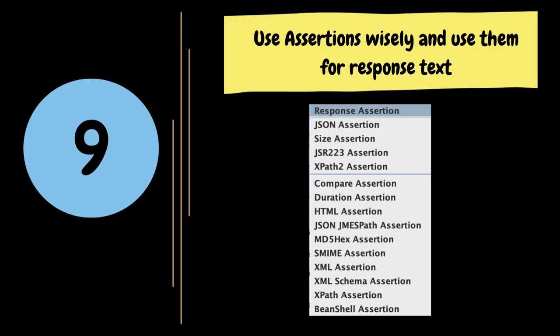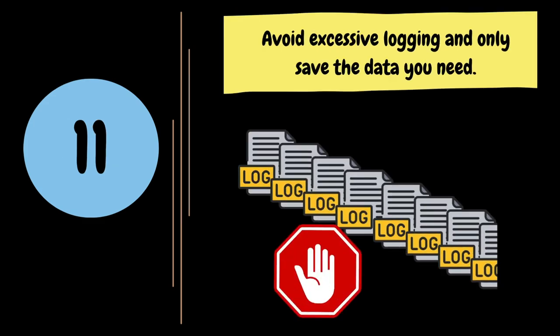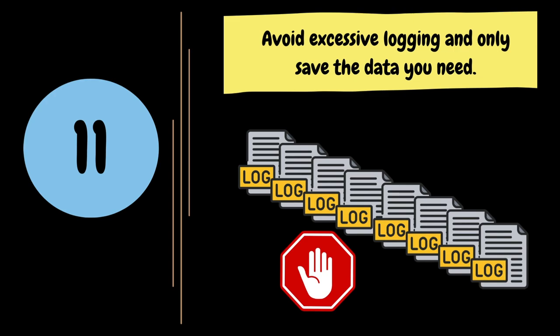We should always disable UI listeners — especially graphs and View Results Tree or table — in scripts that are going to be used for actual load tests. It is better to save results only to a JTL file using the Simple Data Writer. If you don't follow this advice, you might run into a problem where there is not enough memory for the test to run properly. JMeter allows the use of loggers and log levels to capture information about test execution, but excessive logging can significantly impact performance and consume system resources. Configure these components thoughtfully to store only necessary data. For instance, use listeners like the Summary Report or Aggregate Report to collect key metrics without saving detailed response data for each sample.